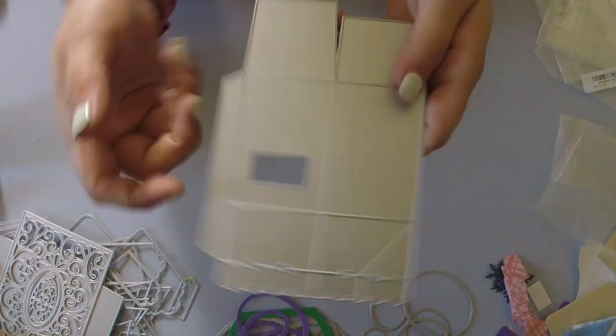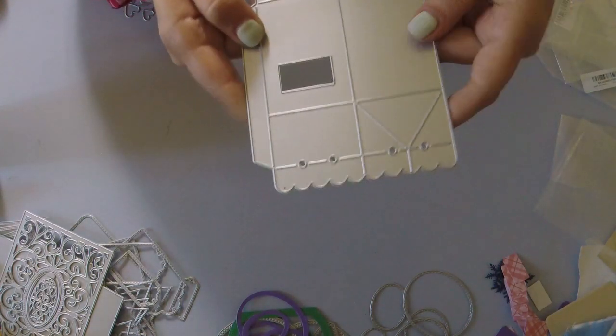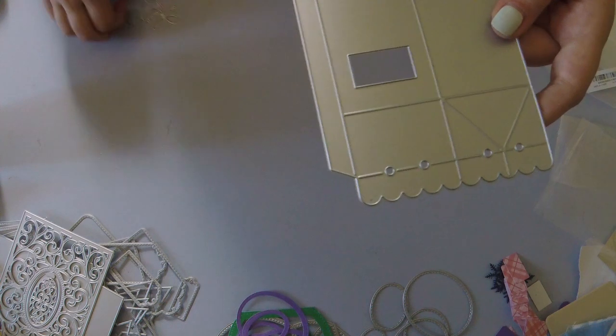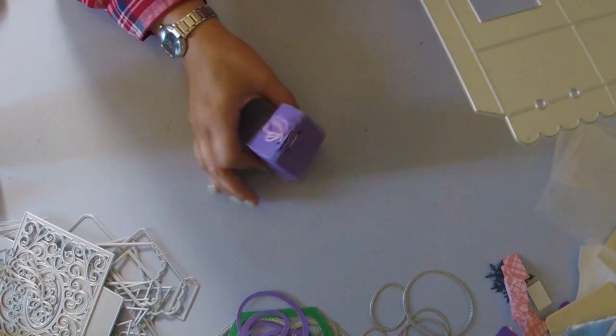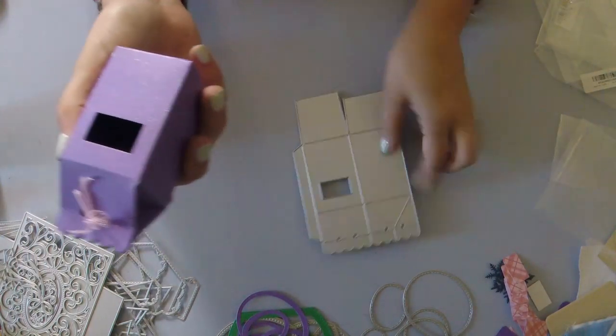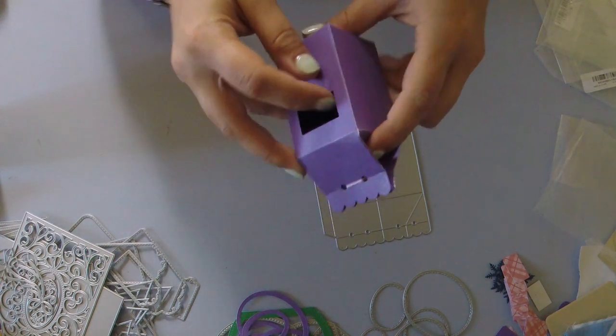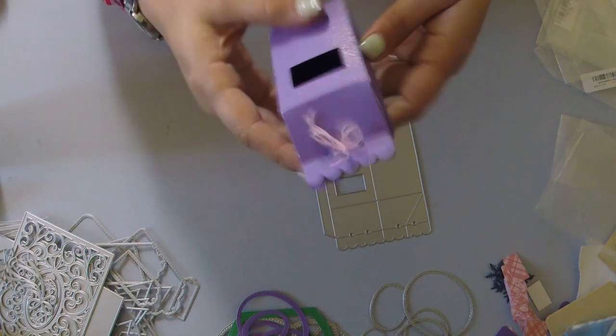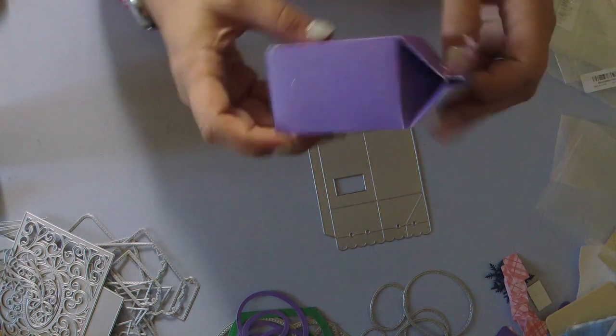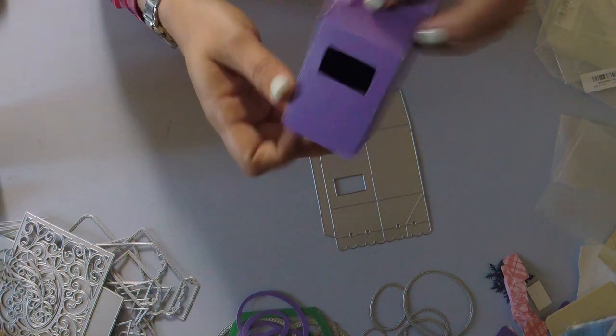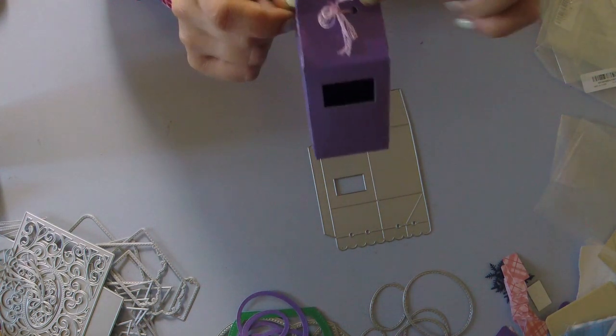And then last but not least in my dies, I have this here, which is making all of the boxes that, again, if you follow me on Instagram, you saw I am making for my wedding. This is what the box turns out to look like after you've cut out two sides. And then you glue them together here in the corners, fold it all up with nice, everything scored. Then you have this cute little box.